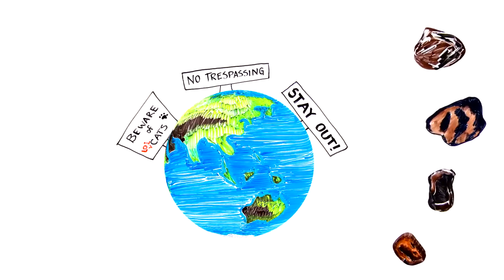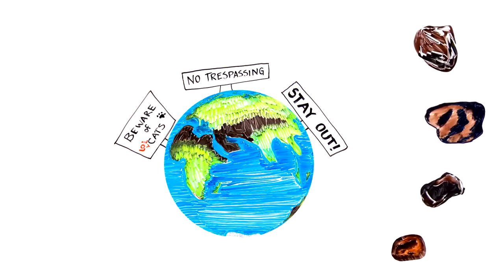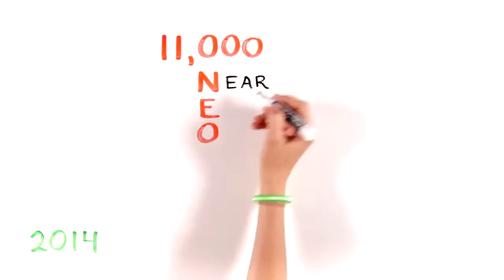A small fraction of these fugitives have orbits that send them into Earth's neighborhood. As of 2014, nearly 11,000 NEOs are known to exist in our neighborhood.